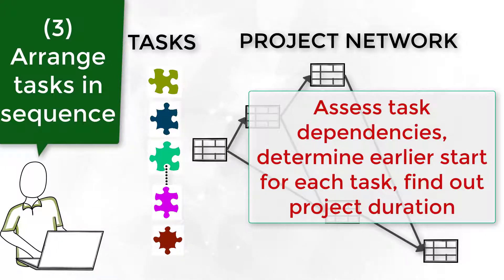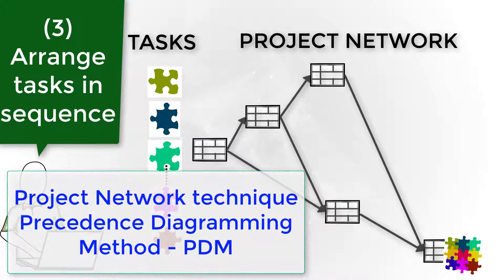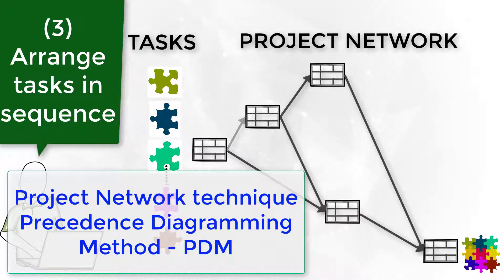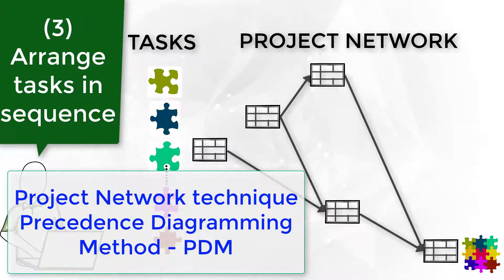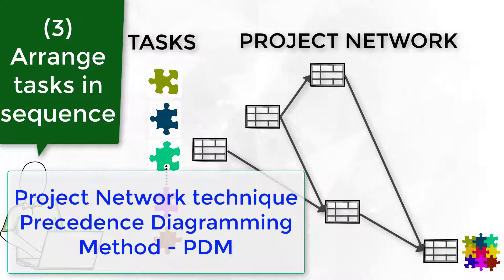After that, it is time to determine the possible start date for each task. This can be done by computing times on the project network. The project network technique is called the Precedence Diagramming Method. The PDM allows us to define the starting and finishing times for each activity, the total project duration, and the critical path. The critical path is the shortest period in which the project can be completed.